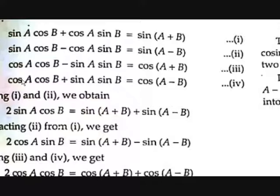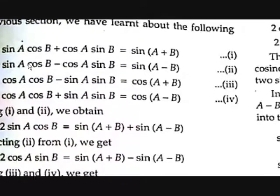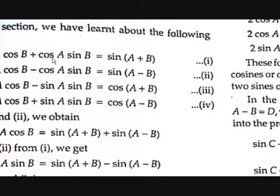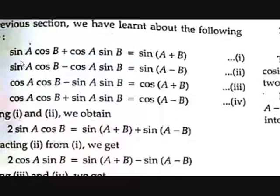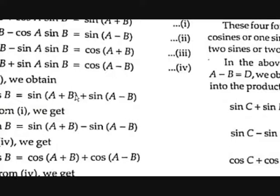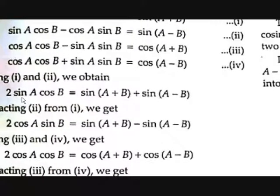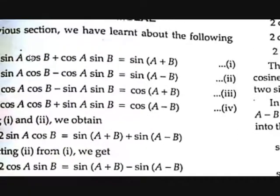Now, if you observe carefully, what happens if you add equations 1 and 2? The cos A sin B terms cancel out, so you get 2 sin A cos B. Therefore, 2 sin A cos B = sin(A+B) + sin(A−B), which gives us the formula: sin A cos B = [sin(A+B) + sin(A−B)] / 2. We got a new formula just by adding equations 1 and 2.